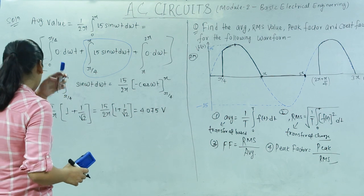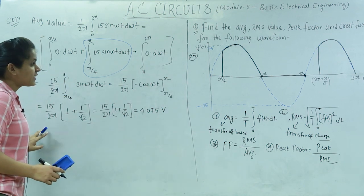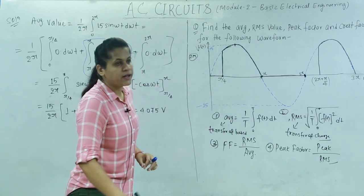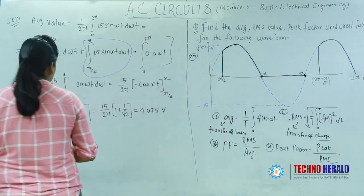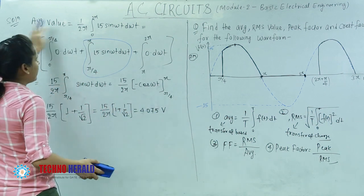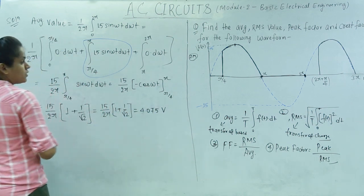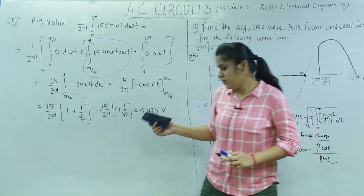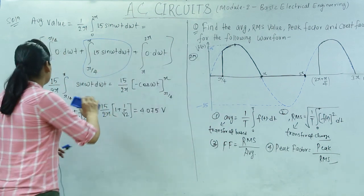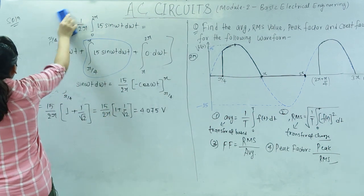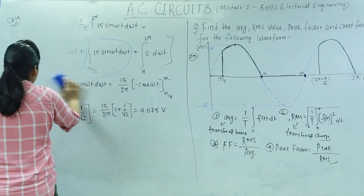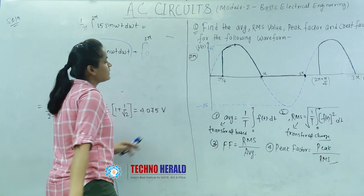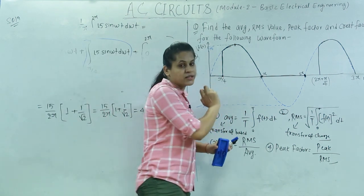You calculate this and you will get 4.075 volts as the average value. This is an important problem because it was asked in your examination. Now let us calculate the RMS value. I am retaining the average value result and moving on. These kinds of problems can always be asked — maybe the waveform limits change, but the approach remains the same.